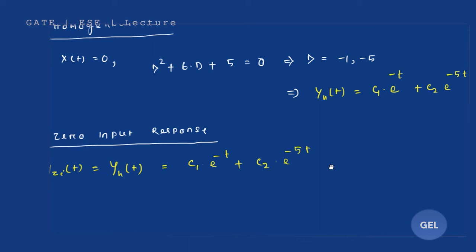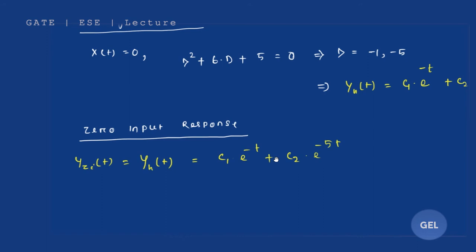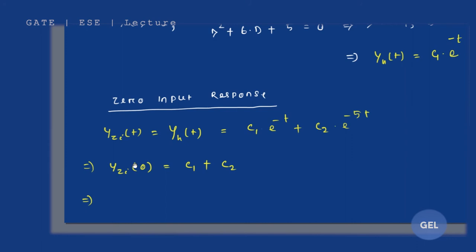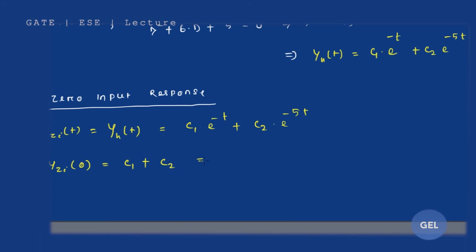To find c1 and c2, we use the initial conditions. Substituting t = 0 into y_zi(t): y_zi(0) = c1·e^0 + c2·e^0 = c1 + c2. Since y(0) = 1, we get the first equation: c1 + c2 = 1.